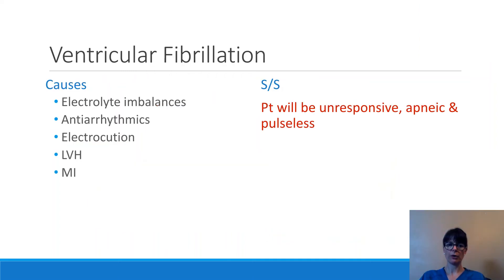Causes of ventricular fibrillation include electrolyte imbalances, antiarrhythmics, and electrocution, which is very common. Left ventricular hypertrophy, or an enlarged left ventricle, can also cause V-fib, as well as myocardial infarction, which can knock out the conduction system of the ventricles — making them quiver and fibrillate and unable to produce a cardiac output.